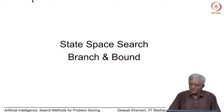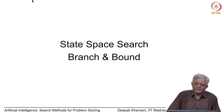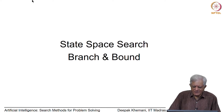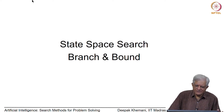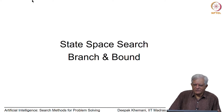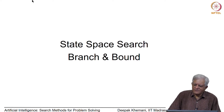Let us continue the study of search algorithms for finding optimal solutions. At the moment we are looking at an algorithm called branch and bound, which is a blind search algorithm. Unlike depth first search, breadth first search, and DFID that we saw earlier, this one caters to problems where there are edge costs involved in the graph and guarantees an optimal solution.